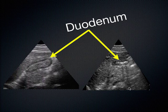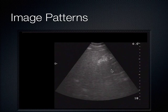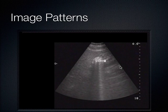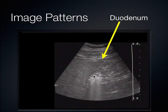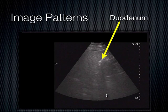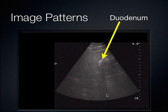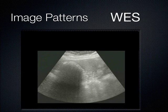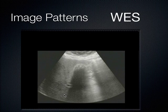Air in the duodenum causes bright and dark shadows — the bright ones are specifically called comet tail artifacts, and the dark ones are called dirty shadows. We can see this is just air in the duodenum, but it looks a lot like a WES sign. This is actually a true WES sign here — a contracted gallbladder around a whole bunch of stones, and those collective stones together cause this big fat shadow coming out of the liver. That's the conundrum with the gallbladder.